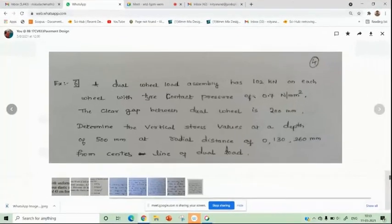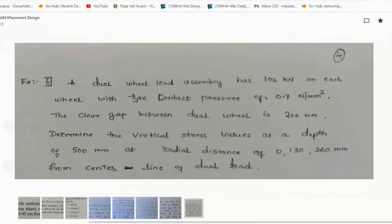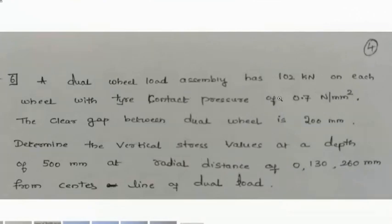A dual wheel load assembly has 102 kilo Newton on each wheel with tire contact pressure of 0.07 Newton per mm square. The clear gap between the dual wheel is 200 mm.